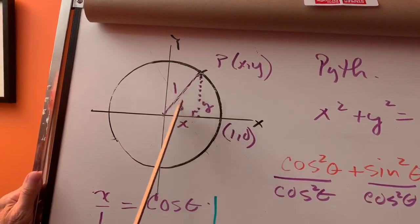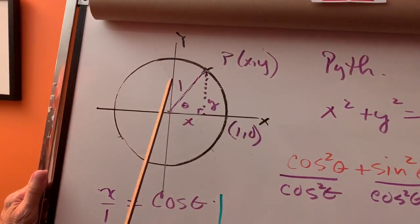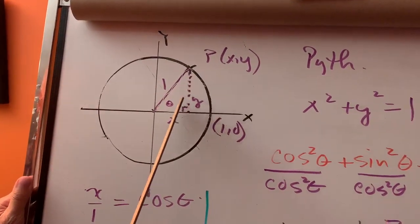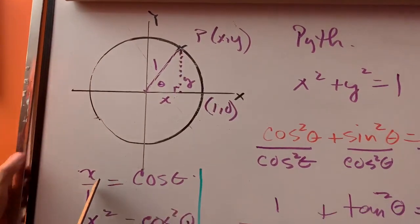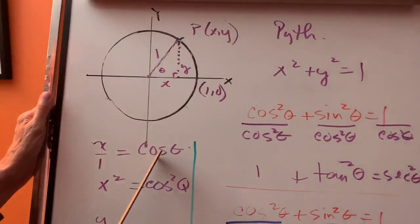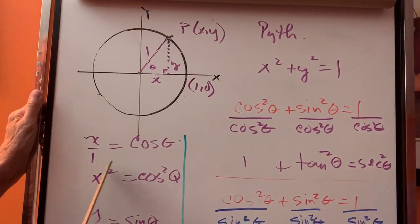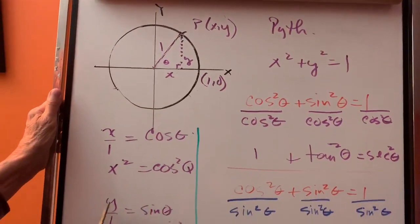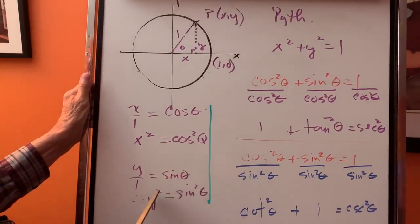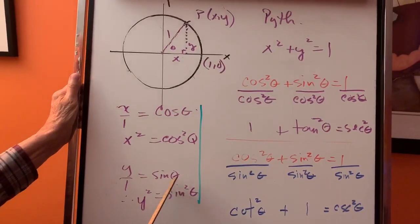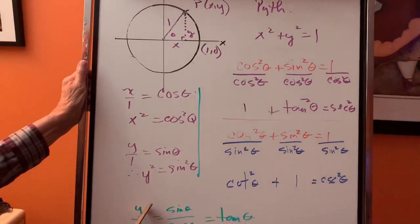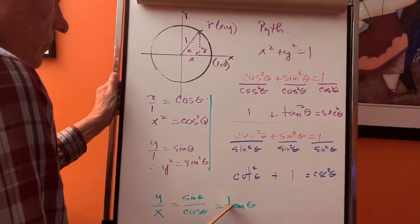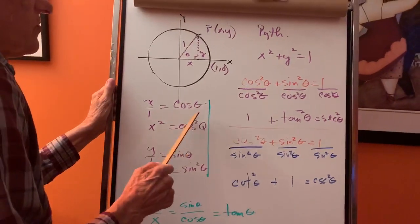Adjacent over hypotenuse is cosine, opposite over hypotenuse is sine. So if you come down here, x over one is cos θ. If I square this side and I square this side, x squared equals cos squared, y equals sine, y squared is sine squared. And y over x is opposite over adjacent - sine over cosine - that ratio equals tangent.